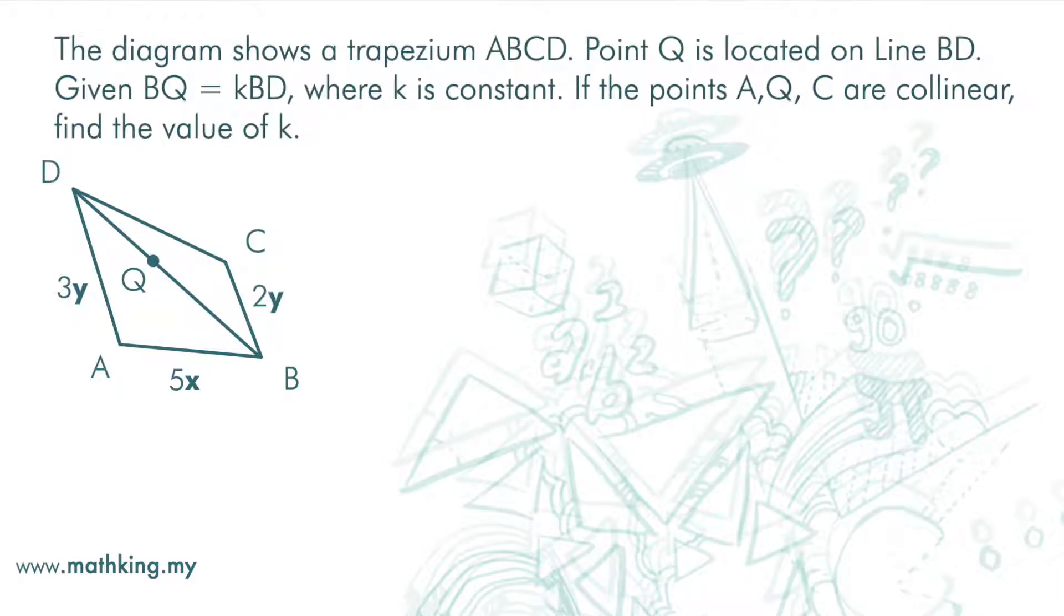The diagram shows trapezium ABCD. Point Q is located on line BD. Given BQ equals KBD where K is constant. If the points A, Q, C are collinear, find the value of K.